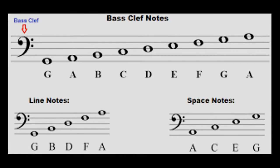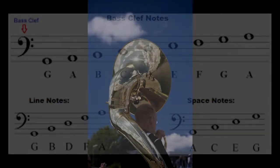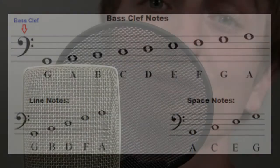The bass clef is used for notes that are lower in pitch. Instruments such as the trombone, euphonium, and tuba use it. And in the chorus, the tenor and bass use it as well.